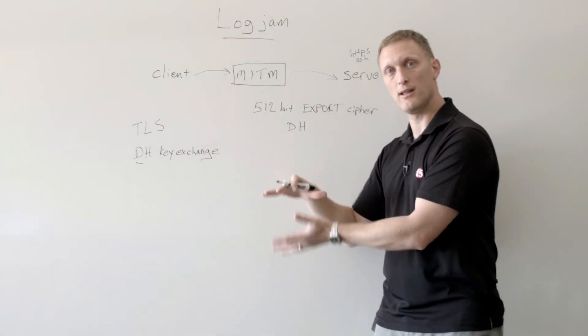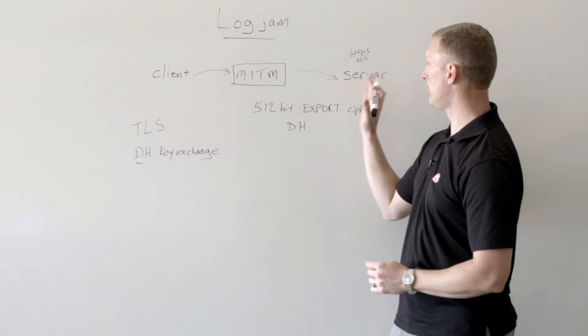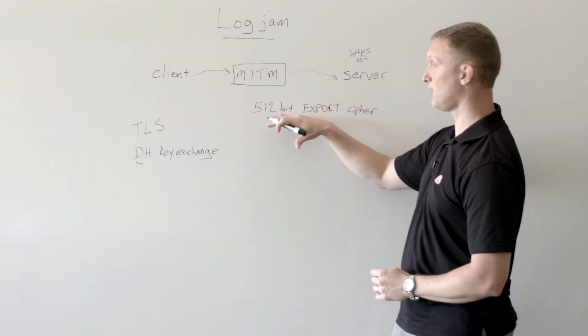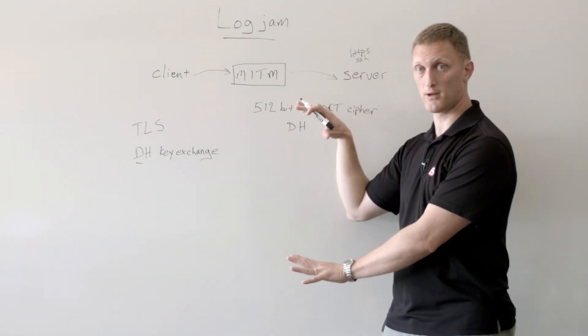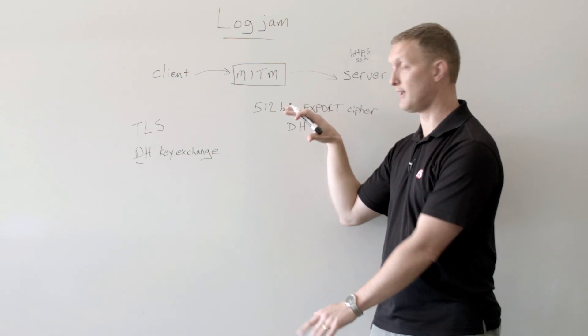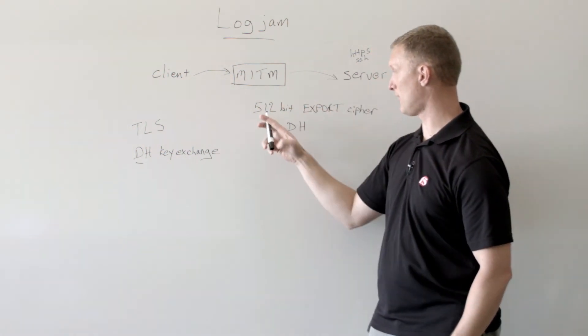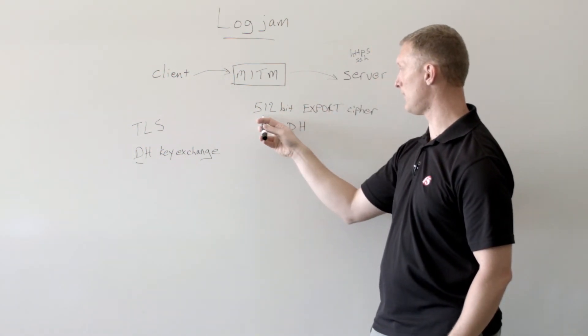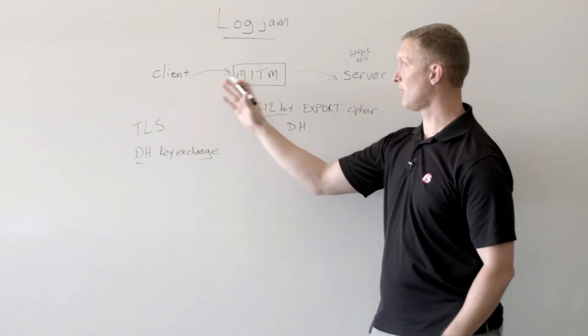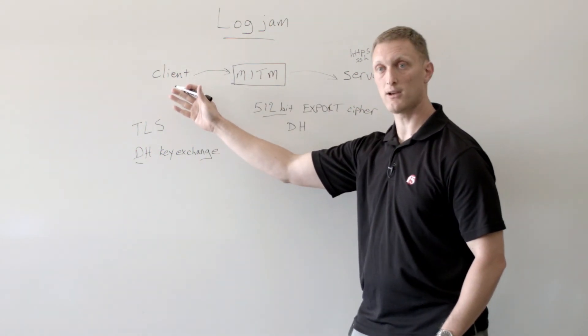if you want to go low like that, if you want to go less secure like that, then fine. So we'll go with the 512-bit Diffie-Hellman export cipher. And so then suddenly that's what they start to communicate with.